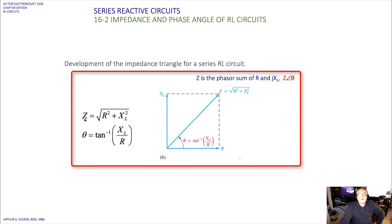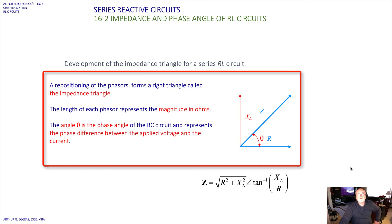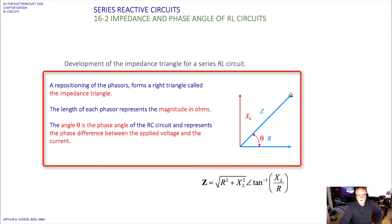Mathematically, the vector sum for the impedance magnitude is the square root of R squared plus XL squared, and the angle theta is equal to the inverse tangent of XL over R. Repositioning the phasors forms the right triangle called the impedance triangle, with XL on the Y axis and R on the X axis. Using the Pythagorean theorem gives us the vector Z.